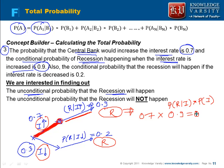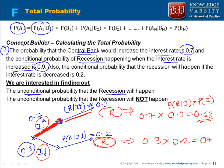So 0.63 is the probability that recession is happening as well as the interest rate is increased. Similarly, the probability of the other node is 0.3 multiplied by 0.2, which is 0.06. Adding these gives 0.69, which is the probability that recession will happen regardless of whether the interest rate is increasing or decreasing — this is your total probability, or unconditional probability.